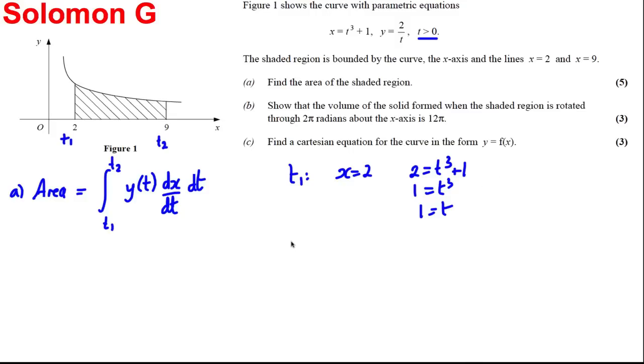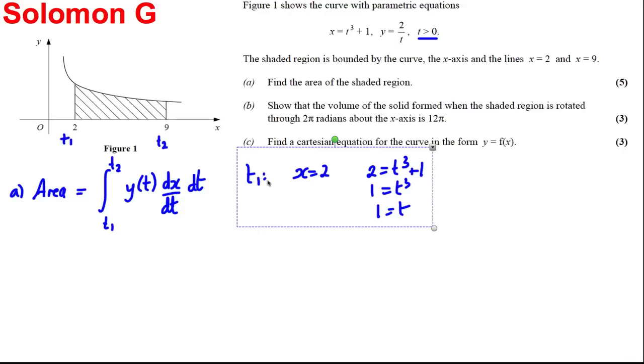Okay, how are we going to find t2? Well, t2, we can say, what's true at t2? Well, x is 9. So we can solve the equation 9 is equal to t cubed plus 1. Subtracting one from both sides, t cubed is equal to 8, and therefore this tells us, taking cube roots, t must be 2. So we have our t1 and t2, perfect.